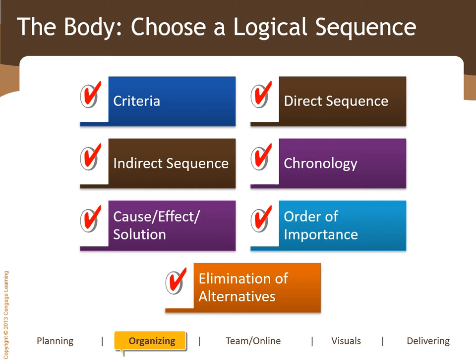You also have chronology — presenting your ideas in chronological order, meaning in terms of how events took place: the first event, then the second, what happened in July, then the month after, and so on. You could also use cause-effect-solution — organizing your presentation in terms of the relationship between different topics: this cause led to that effect, and that led to something else.